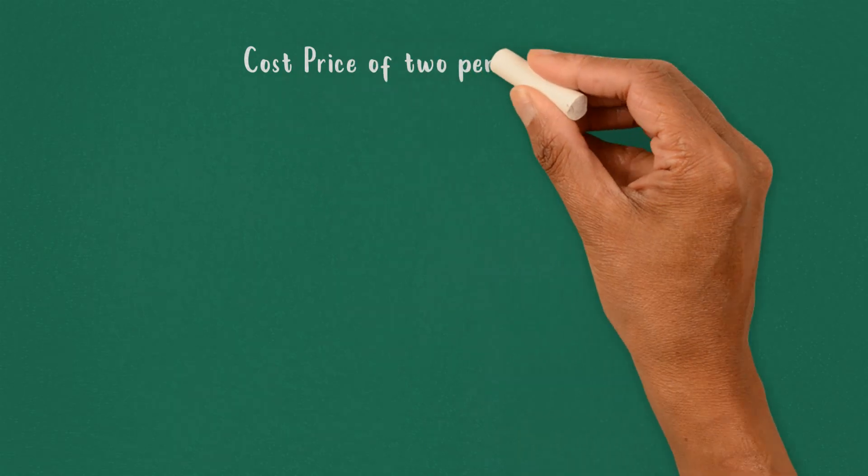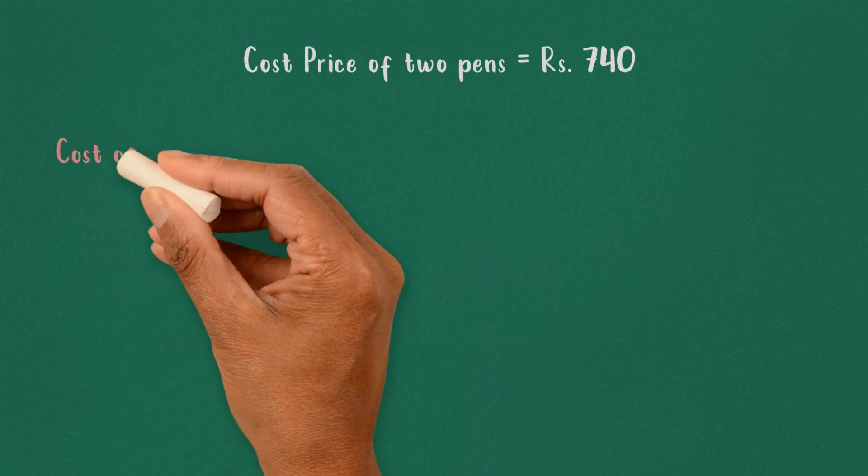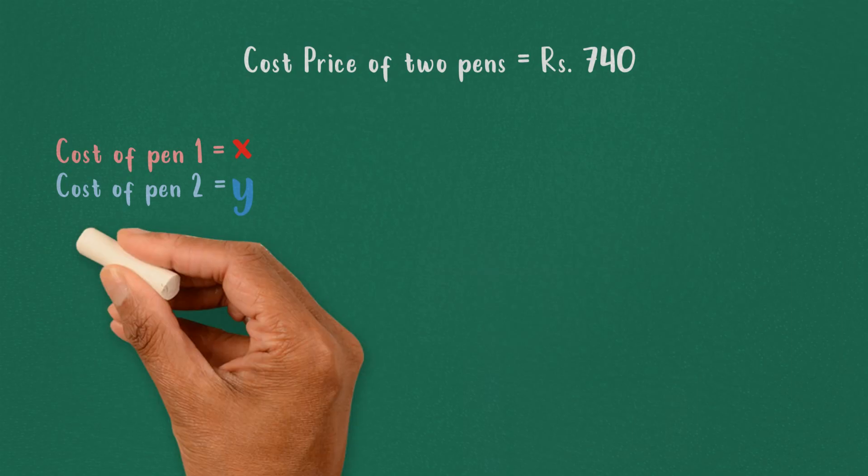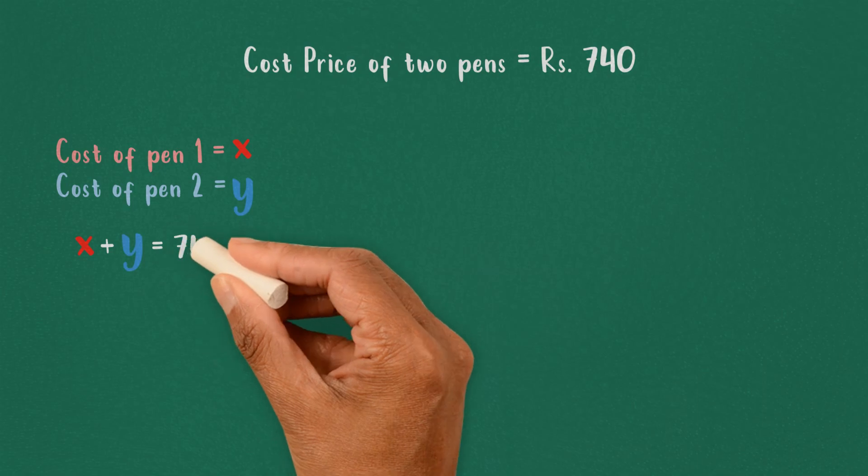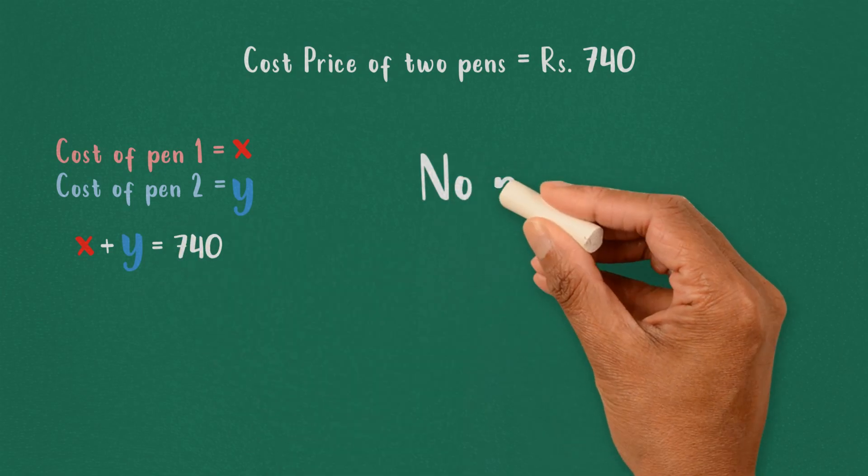The cost price of two pens is given to be 740 rupees. So let the cost of the first pen be x and that of the second be y, which add up to 740. Since there is neither profit nor loss in the transaction...